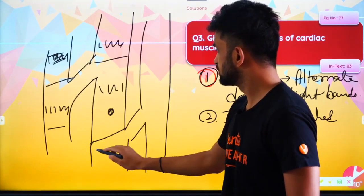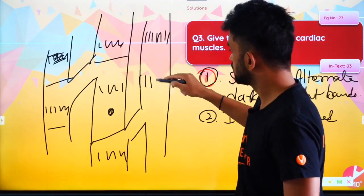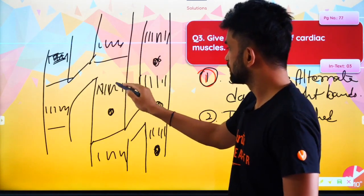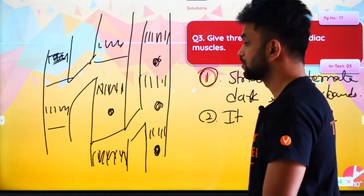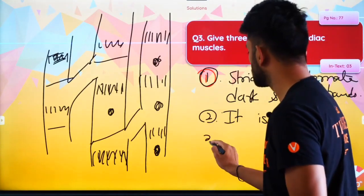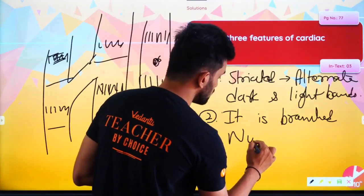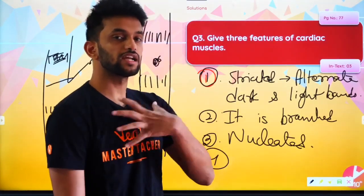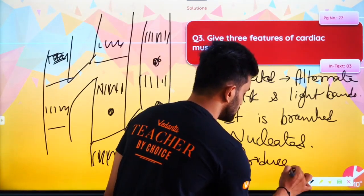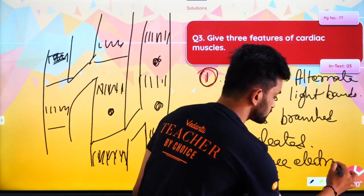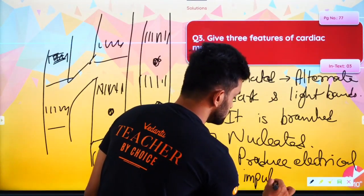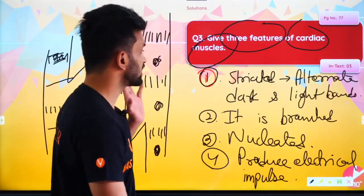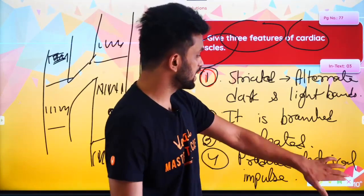Then it is also nucleated — that is the third point. It is nucleated. And one more thing: it can produce electrical impulses on its own. These are the three features of cardiac muscles. Apart from that, a diagram is a must — you should always include a diagram for any question.